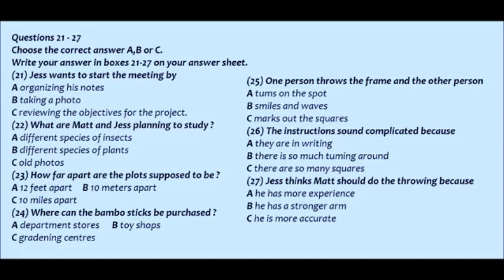That sounds a bit complicated. That's only because it's all in writing. It's just a simple throw, turn, throw, turn, throw, turn, until we have 10 squares. And I guess you want to do the throwing. Well, if you don't mind. I'm sure you'll be more accurate at marking the squares. Yes, I am sure I am. And I'm sure you've got a stronger throwing arm.